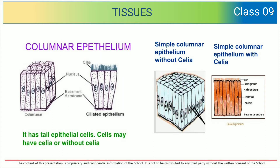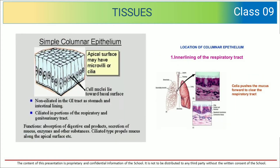Columnar epithelium has tall epithelial cells. The cells may have cilia or be without cilia — cilia might be present or absent. Those with cilia are called ciliated columnar epithelium. Cilia are small hair-like structures present just above the columnar epithelium.